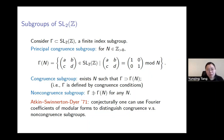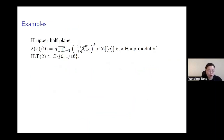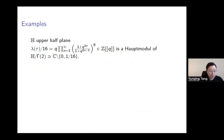To set up notation, I would like to record a classical example going back to the work of Klein and Fricke. We start from the lambda function, namely the Hauptmodul of the curve with a full level two structure. It can be concretely written down as a Q-expansion. What's important is that lambda/16 is a Q-expansion with Z coefficients, with no constant term and leading coefficient 1 for Q. Here Q equals e^{πiτ}.